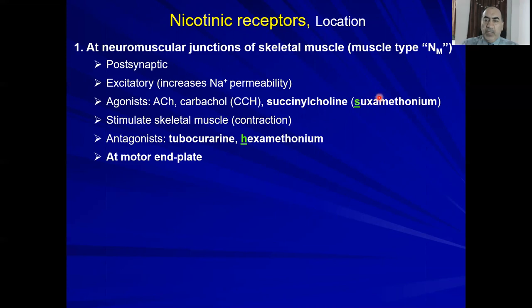Antagonists at the NM receptor include curare (tubocurarine) and hexamethonium. To avoid confusion between suxamethonium and hexamethonium, use this mnemonic: S for stimulatory — suxamethonium stimulates the NM nicotinic receptor; H is inhibitory — hexamethonium will inhibit the NM receptor. These receptors are expressed at the motor end plate.